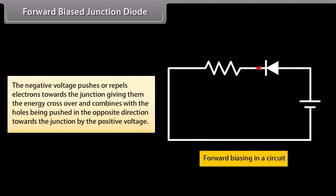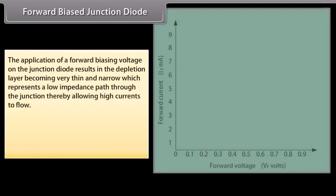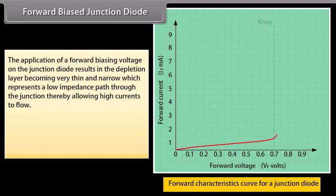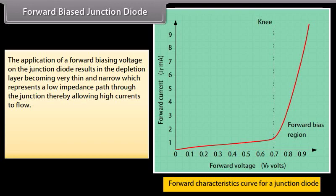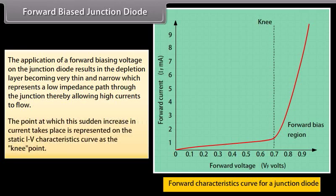The negative voltage pushes or repels electrons towards the junction, giving them the energy to cross over and combine with holes being pushed in the opposite direction towards the junction by the positive voltage. The application of a forward biasing voltage results in the depletion layer becoming very thin and narrow, which represents a low impedance path through the junction, thereby allowing high currents to flow. The point at which this sudden increase in current takes place is represented on the static I-V characteristics curve as the knee point.